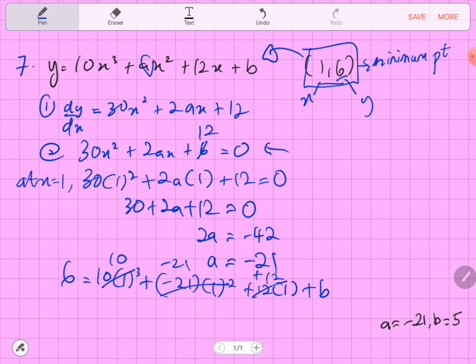10 plus 12 is 22 minus 21 is 1. So b is equal to 5. We find out what is our a, what is our b.